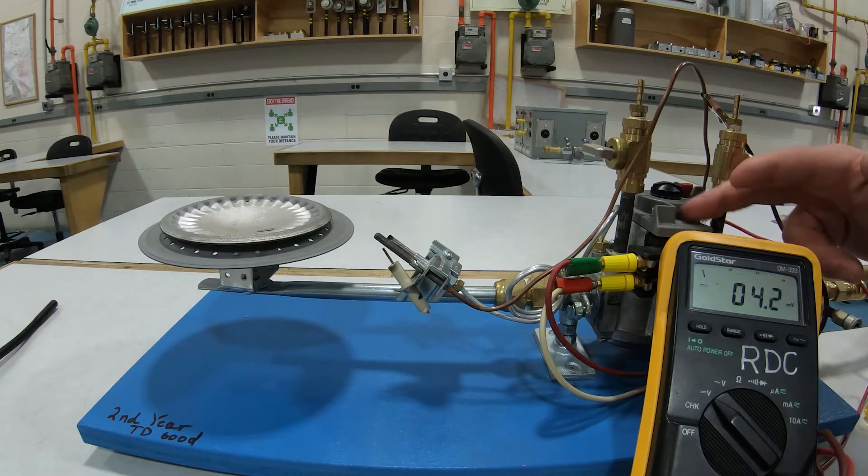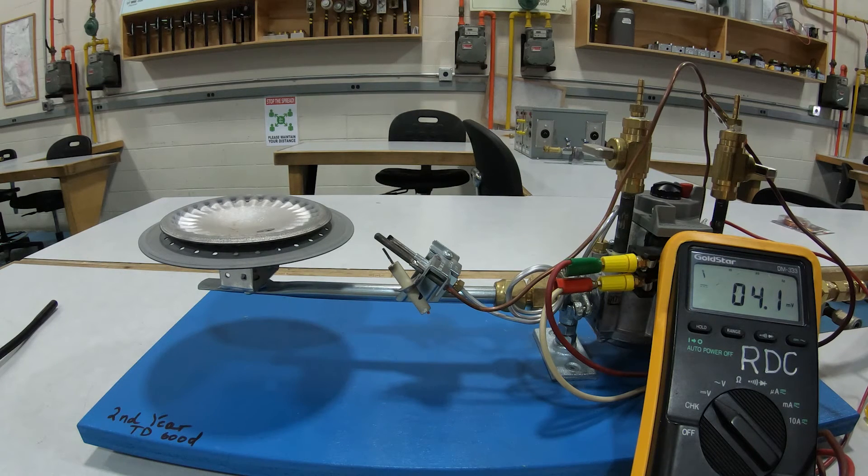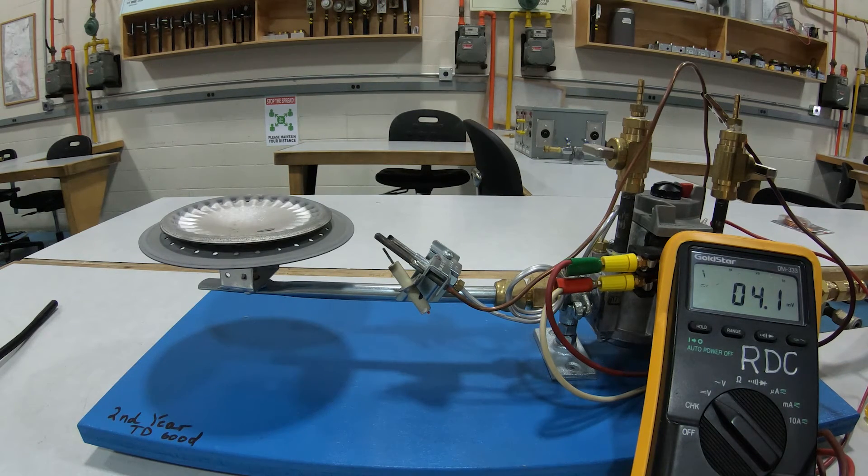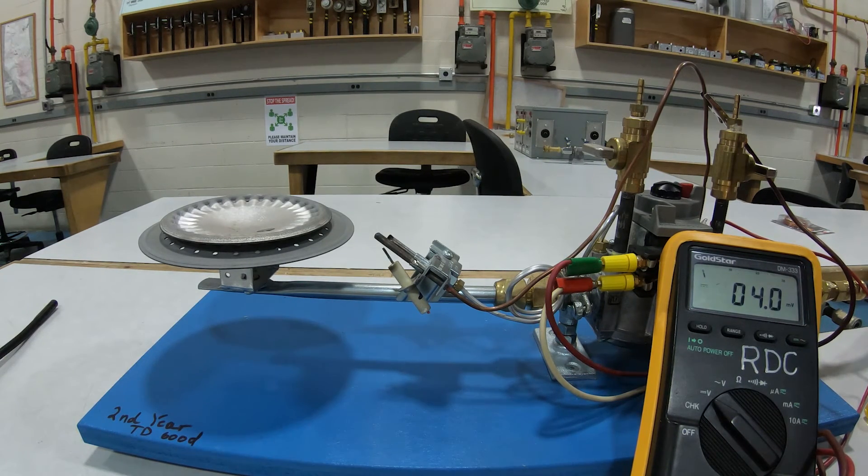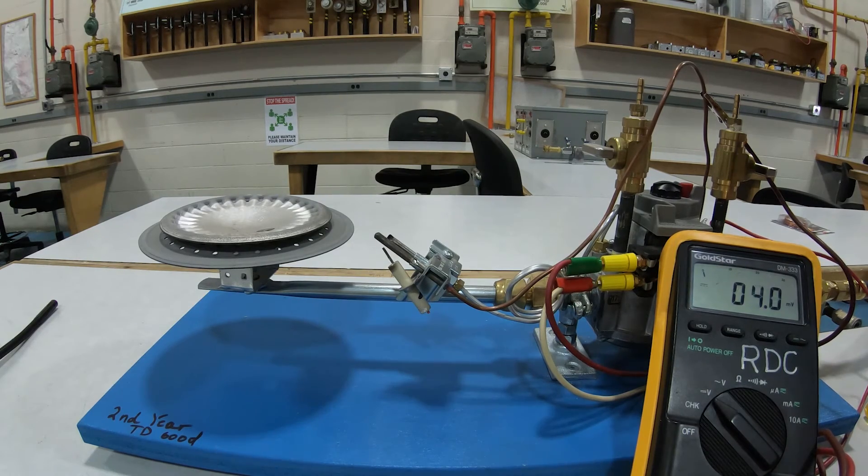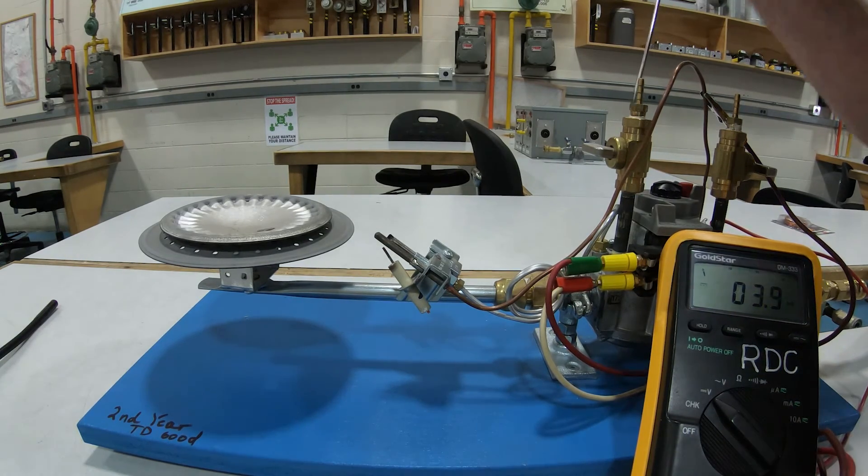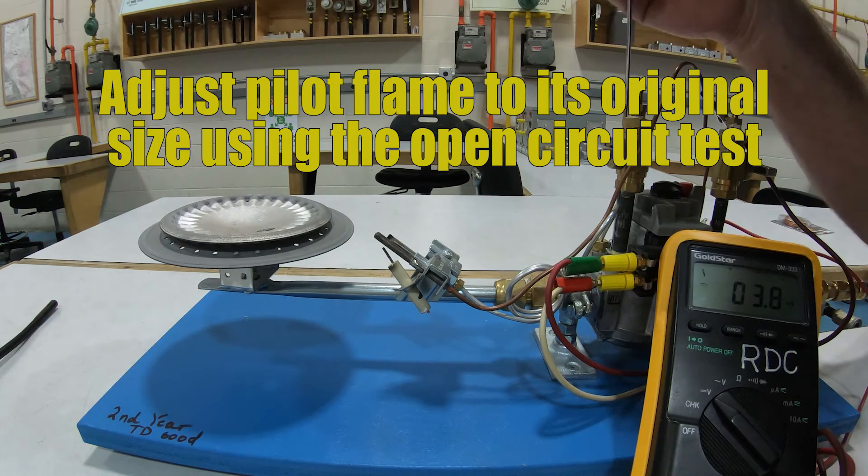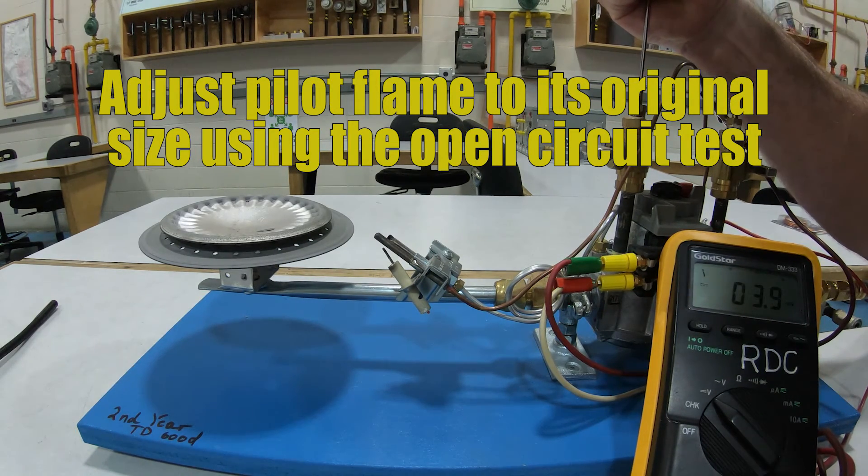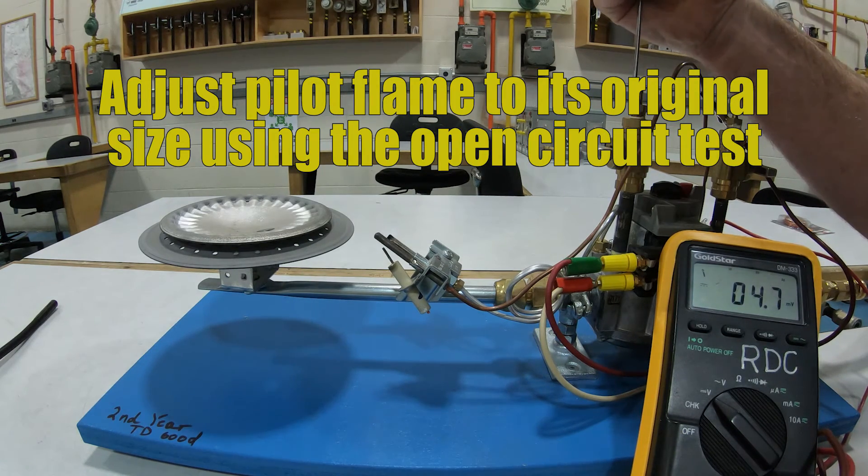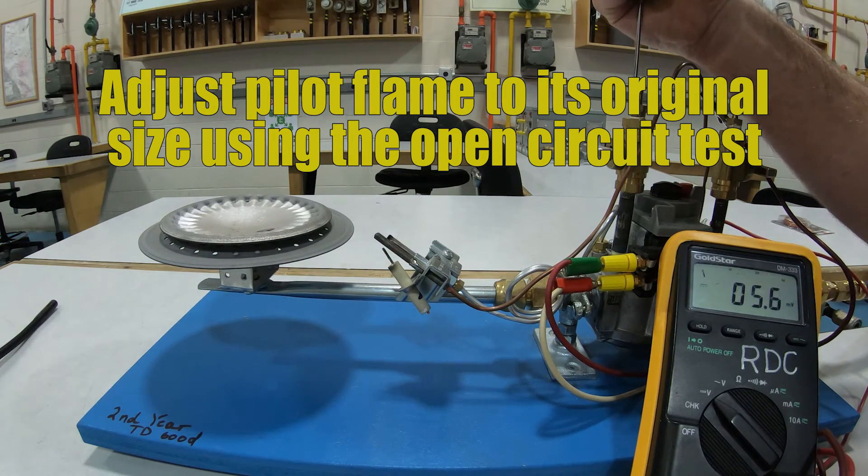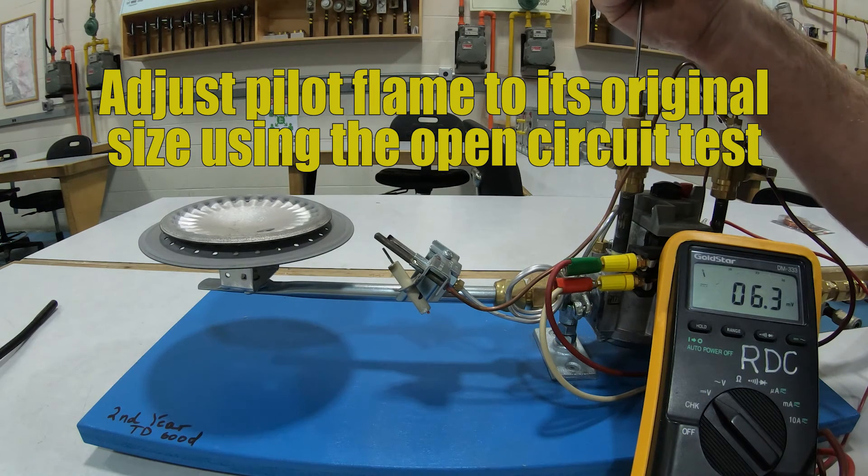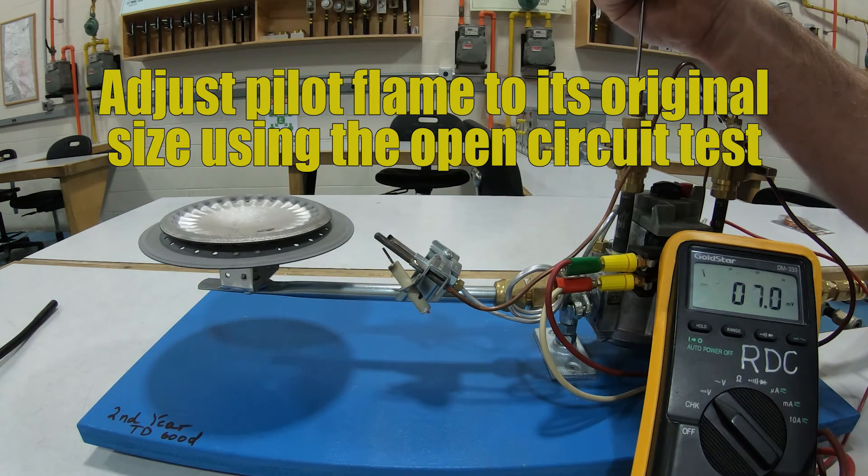That is your turndown test. And now you want to bring that pilot flame back up to a proper height. Now you're supposed to do that with an open circuit test to bring it back up to what did we see before, around 28 millivolts, but our acceptable range was between 17 and 32 millivolts.